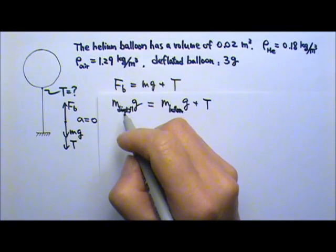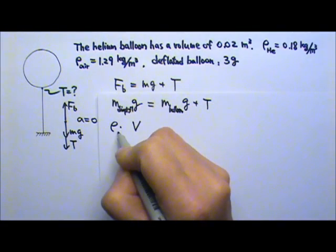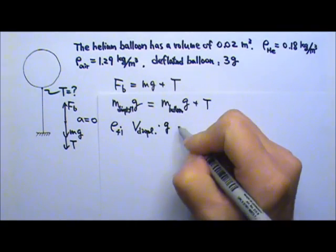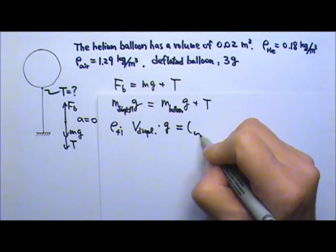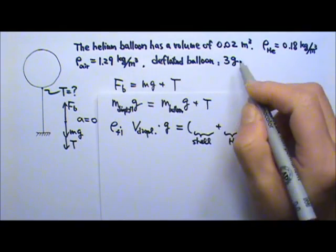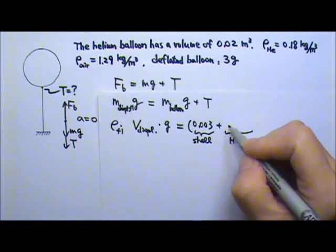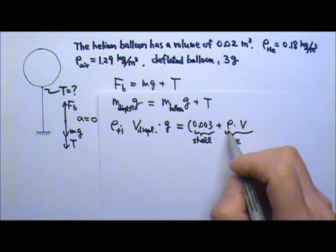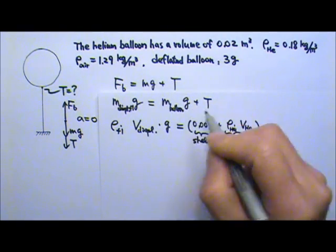The mass of the displaced fluid is the density times the volume. Since it's the mass of the displaced fluid, it is the density of the fluid times the displaced volume, then multiplied by g, and that equals the mass of the balloon times g. The mass of the balloon has two parts: the mass of the shell of the balloon, and the mass of the helium inside. The shell of the balloon is 3 grams, so it is 0.003 kilograms, plus the helium inside. The mass of the helium is the density of the helium times the volume of the helium, then multiplied by g.